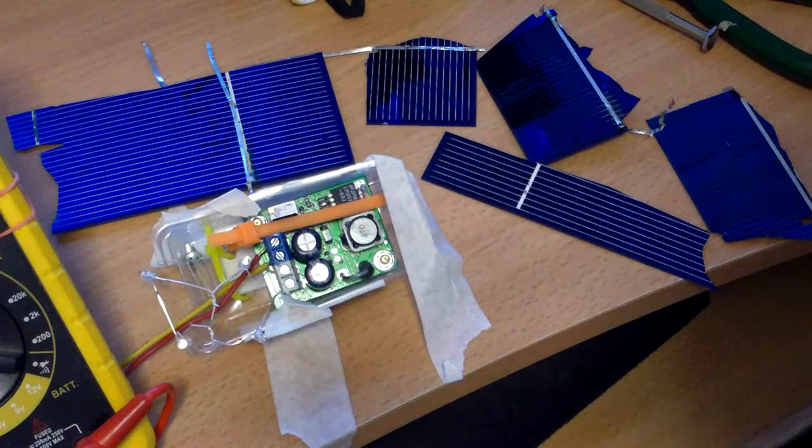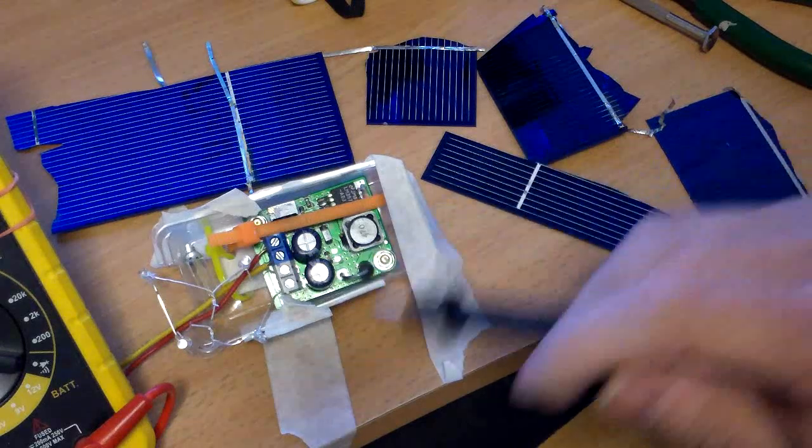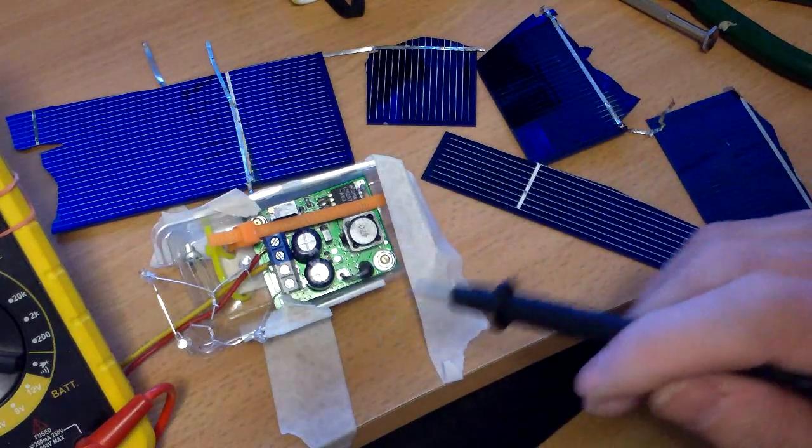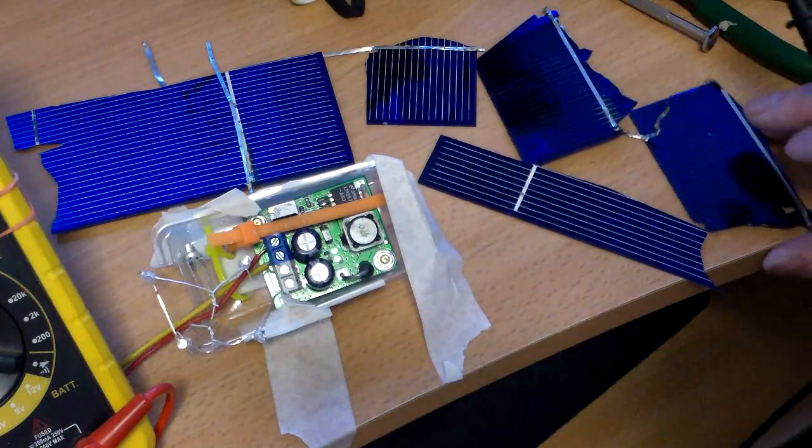If you put in 3.5 you can set it to 9, 12, 13, 14, 15, 16. So you can set this up to charge different types of batteries.